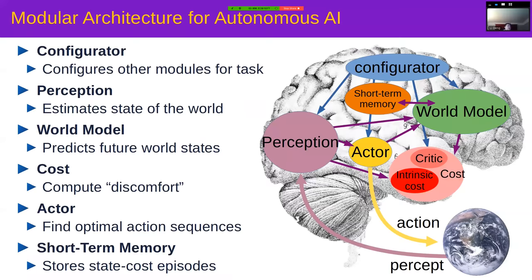Here is a possible architecture. Starting with the world model: it allows the intelligent agent to predict what's going to happen before it happens. The world model gets an estimate of the state of the world from the perception module — which is of course incomplete — and then allows the system to predict what's going to happen, either because the world is evolving or because there's a sequence of actions the agent wants to take.